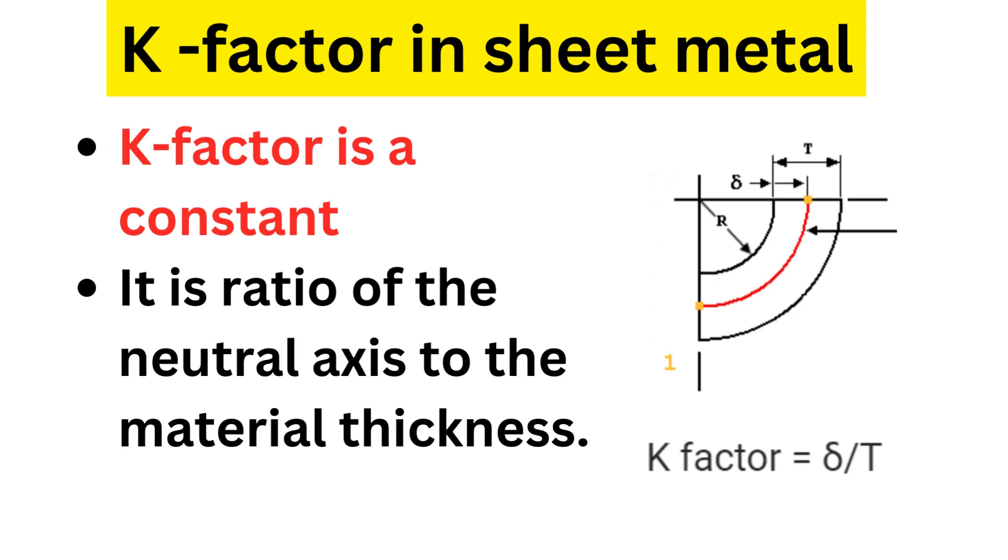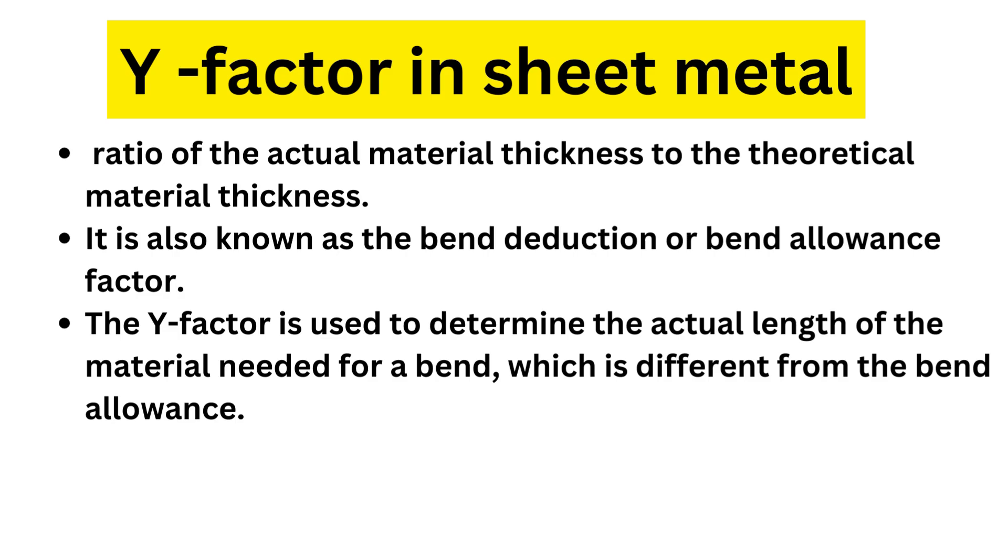The K-factor is a constant. It is a ratio of position of neutral axis to the material thickness. Y-factor is a ratio of actual material thickness to the theoretical material thickness. It is also known as the bend deduction factor or bend allowance factor. The Y-factor is used to determine the actual length of the material needed for the bend.